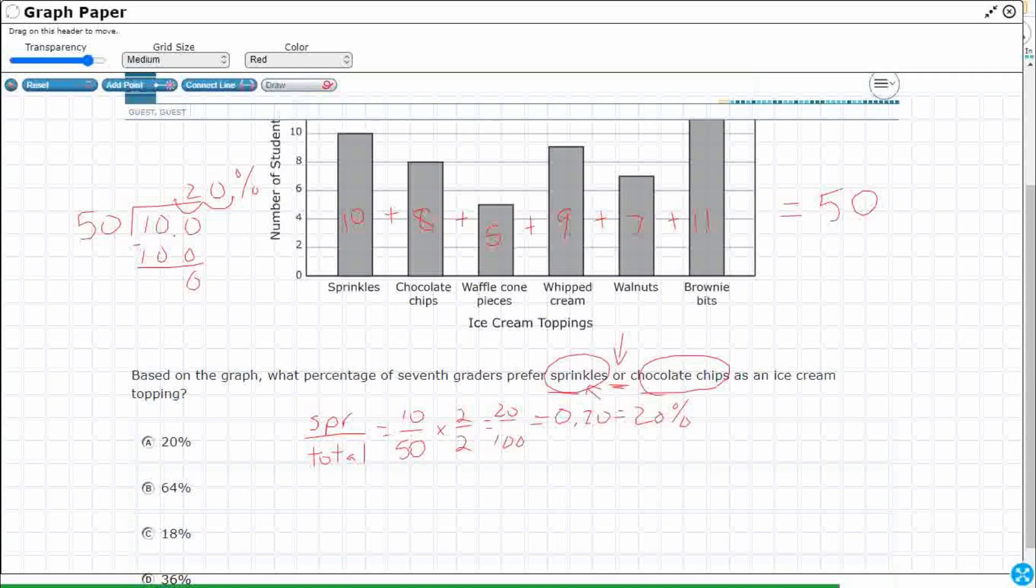If I do the same thing for chocolate chips, that's going to be 8 out of 50. I kind of like doubling it to get up to 100, so I will do that. So that's going to be 16 hundredths which is 0.16, which is move the decimal over twice, 16 percent.